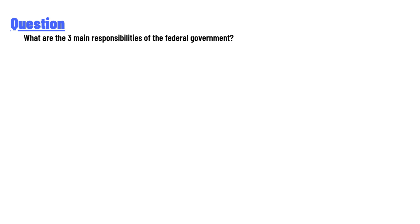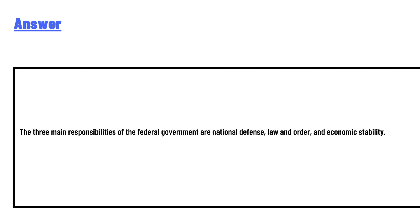What are the three main responsibilities of the federal government? The answer is: the three main responsibilities of the federal government are national defense, law and order, and economic stability.